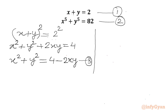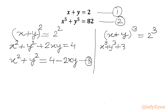Now we can consider cubing the same equation on both sides. So I will write x plus y whole cube equals 2 cubed. Let's apply the a plus b whole cube formula. So we will get x cubed plus y cubed plus 3 times xy times x plus y equals 2 cubed, which is 8. Now x plus y as per equation 1 is 2.